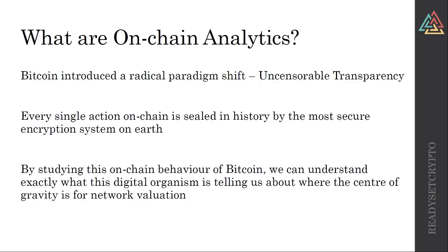There's then the external data that we assign to the Bitcoin network, which is things like price and date-time. Bitcoin doesn't know what day of the week it is — it only knows what block height it is. Because block times are not exactly 10 minutes, we have to use the block time estimate to date-time as our connector. Then we can start assigning correlations between hash rate, transaction flows, and probably the most common thing we all look at, which is price. So how is the Bitcoin network valued compared to how much it's used? That's really the power of what on-chain analytics is trying to resolve.